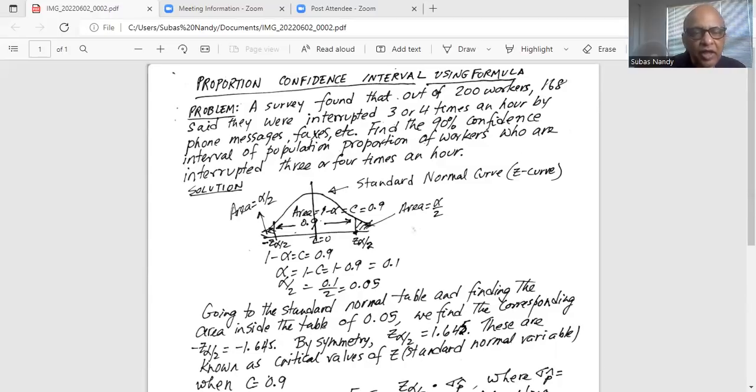Now we need to find the value of minus Z alpha by 2 and positive Z alpha by 2 on the right. Minus Z alpha by 2 on the left of Z equal to 0, positive Z alpha by 2 on the right of Z equal to 0. These are called critical values of Z.